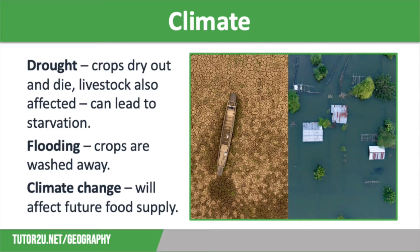Drought is a really common cause of food insecurity as crops struggle to grow where it's too dry, and hot temperatures mean that evaporation rates are high, causing the land to dry out even more quickly. Drought simply means a long period of below-average rainfall, and it leads to crops withering and dying. It can also affect livestock, destroying their food supply and making them weak from a lack of drinking water, leading to livestock deaths. Loss of crops and livestock can lead to undernourishment and eventually starvation for people living in the areas affected.